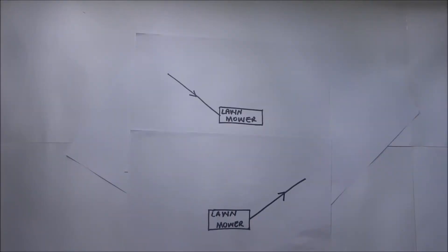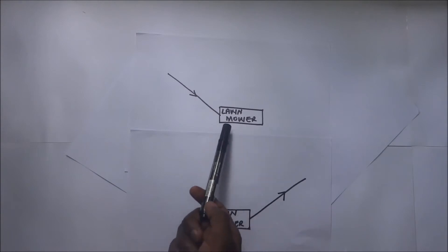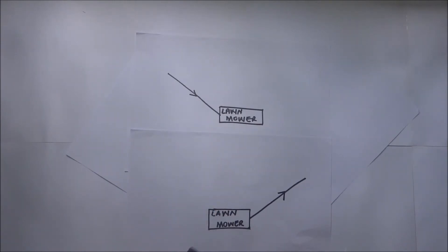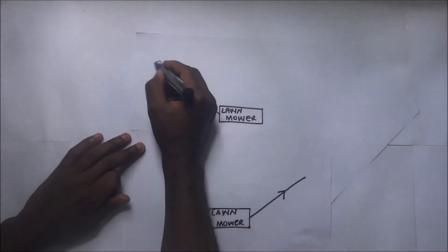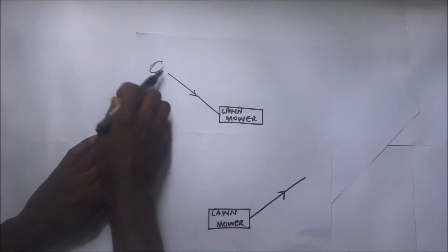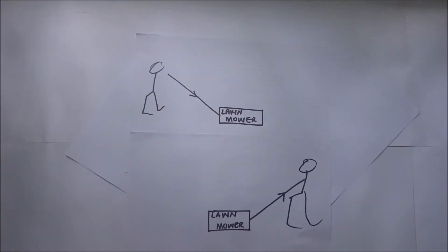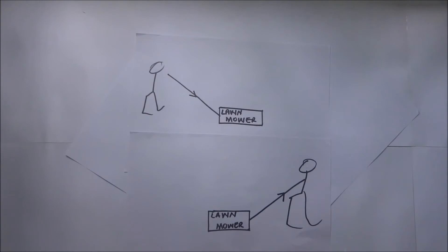This right here is a diagrammatic representation of the question. We have a lawnmower — this is one lawnmower, and here is another lawnmower. We can push it or we can pull it. Someone is here pushing the lawnmower and here someone is pulling it. The question says: why is it easier to pull the lawnmower than to push it? And the question is why.